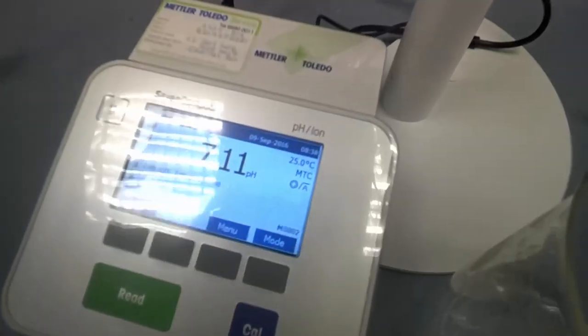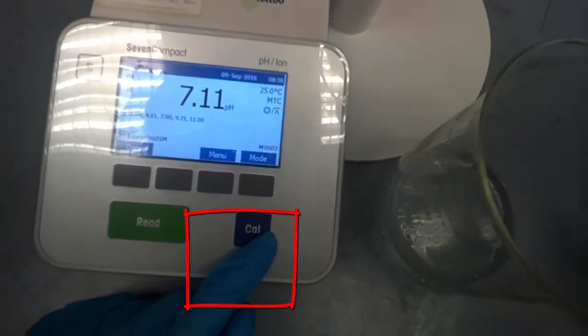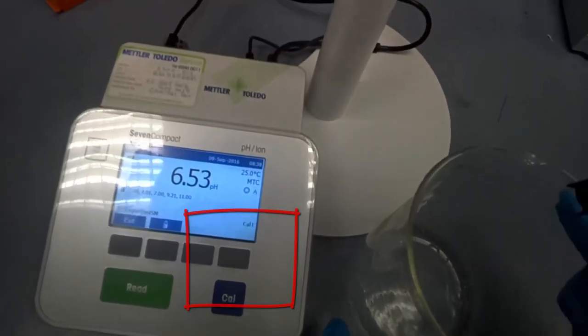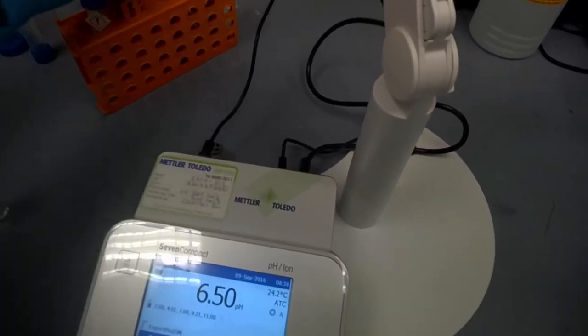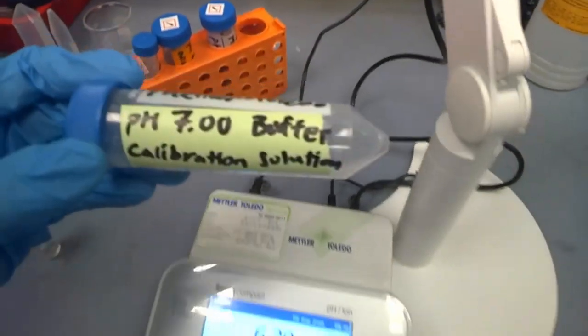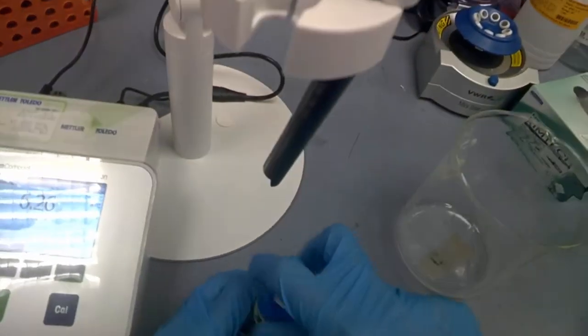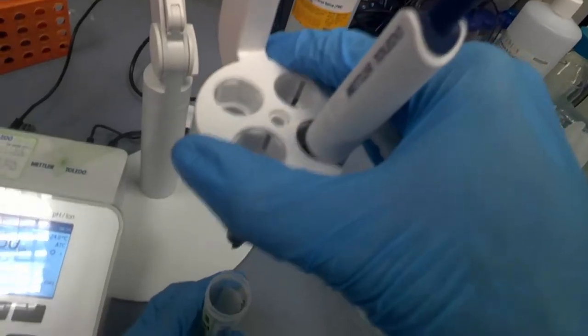And then next, we press calibration. This is CAL, calibration. Press CAL, and we start with pH 7. So that's the buffer. We will put the arm inside there.